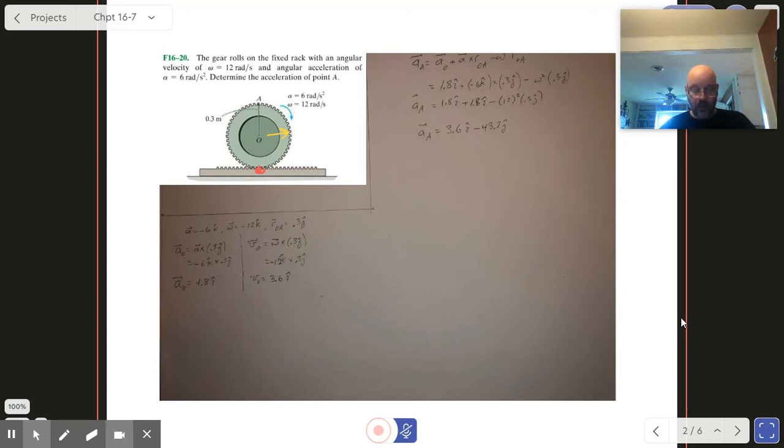The way I went about doing this was to write down what we knew about alpha and omega, and then I knew that a_0 would be some alpha crossed with the distance. The distance that I crossed it with happens to be the distance from this point of no motion up to the center, so that's why I used a value of 0.3 for that radius.